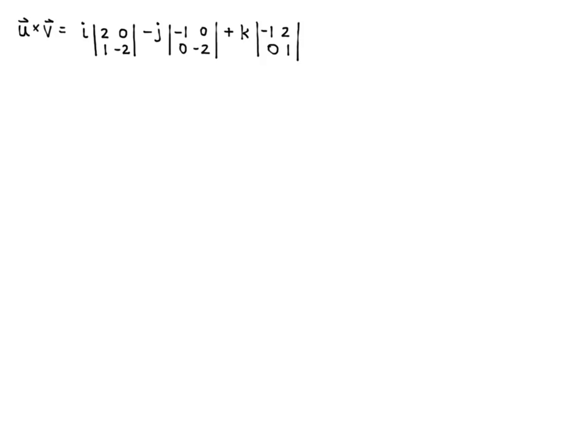Continuing, u cross v equals i times det(2, 0; 1, -2), minus j times det(-1, 0; 0, -2), plus k times det(-1, 2; 0, 1). Using forwards diagonal minus backwards diagonal: this equals i(-4 - 0), minus j(2 - 0), plus k(-1 - 0), which simplifies to -4i - 2j - k. So u cross v = (-4, -2, -1).